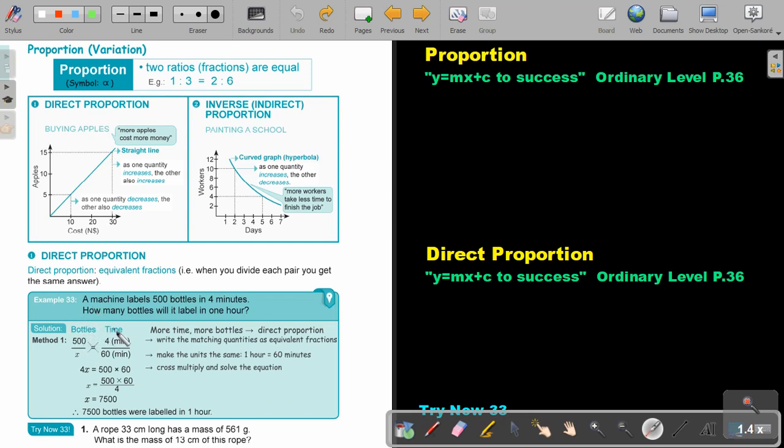So always, I like to do it, bottles, time, 500 bottles in four minutes. Make your units the same. So one hour, that will be 60 minutes. So X, I don't know how many bottles, in 60 minutes. This is equal fractions. So I can cross multiply. So X times four is four X. 500 times 60, it's 500. And then I just divide by four. So it will label 7,500 bottles in one hour.